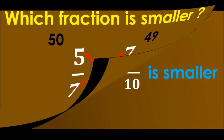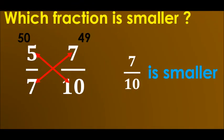Which one do you think is smaller here? 49 is smaller, right? So 7 upon 10 is the smaller fraction.